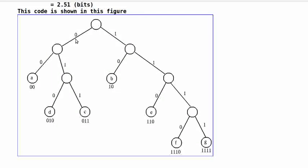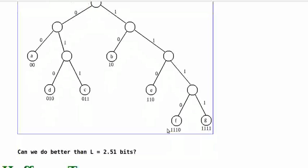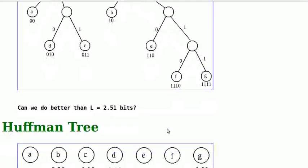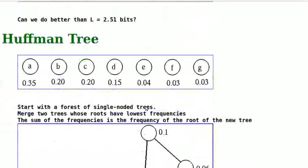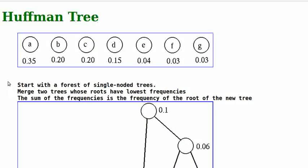Obviously, this code has a shorter average length than the 3 bit fixed length code. Can we do better than L equals 2.51 bits? This question was answered by Huffman who found a way to construct a code that is optimal, whose average length is minimal. We refer to such a code as Huffman code.